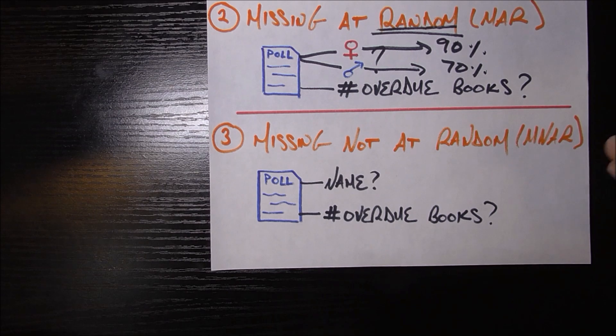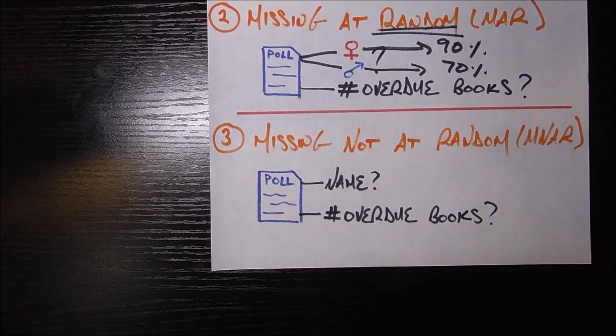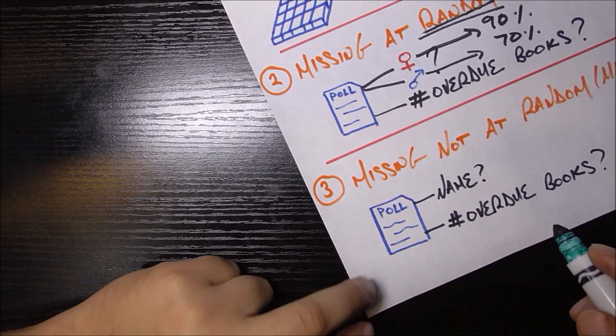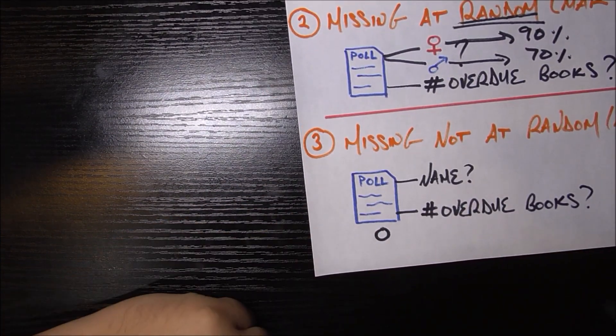So if someone tells you I have 15 overdue books, and you ask for their name, you can now identify who has 15 overdue books, and people might be self-conscious about that. So to guide this example, let's say that, give a couple numbers here.